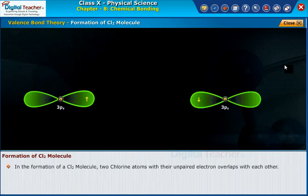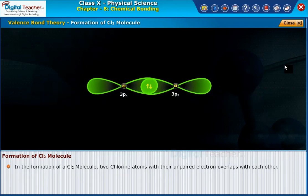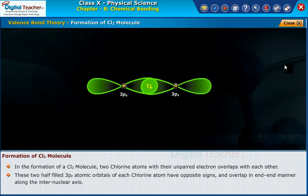In the formation of a chlorine molecule, two chlorine atoms with their unpaired electrons overlap with each other. These two half-filled 3pz atomic orbitals of each chlorine atom have opposite signs and overlap in an end-to-end manner along their internuclear axis. As a result, a sigma bond is formed between the two 3pz orbitals of each chlorine atom.